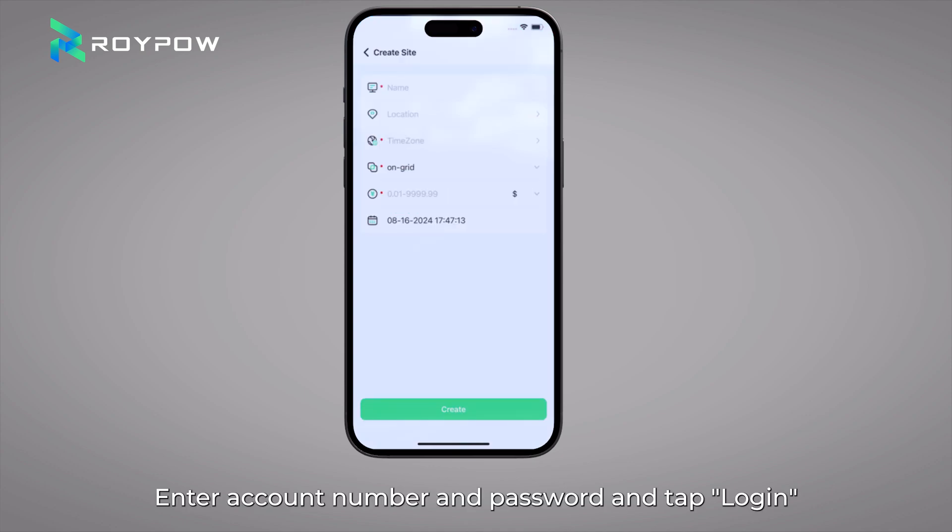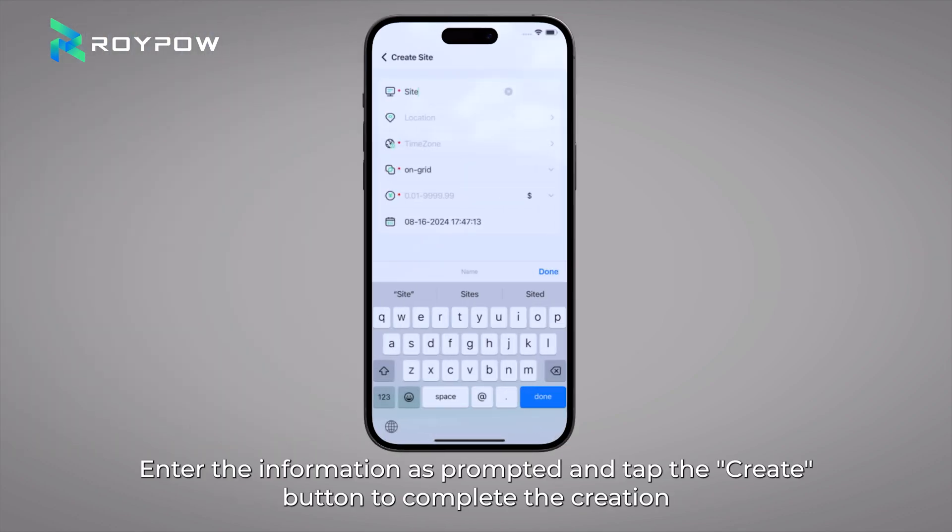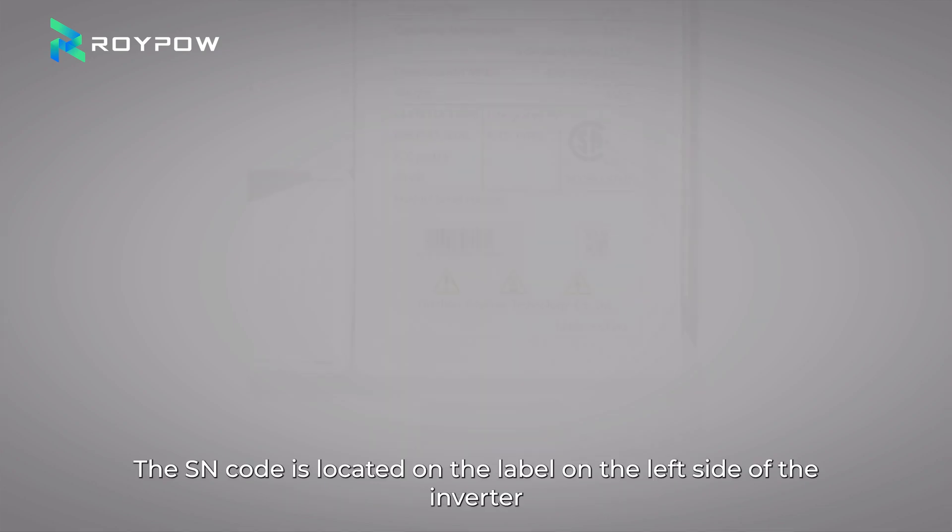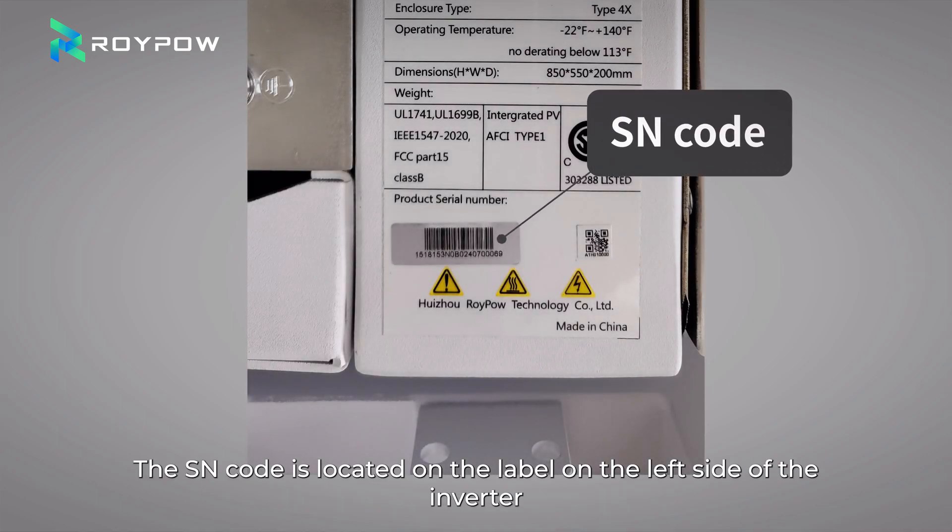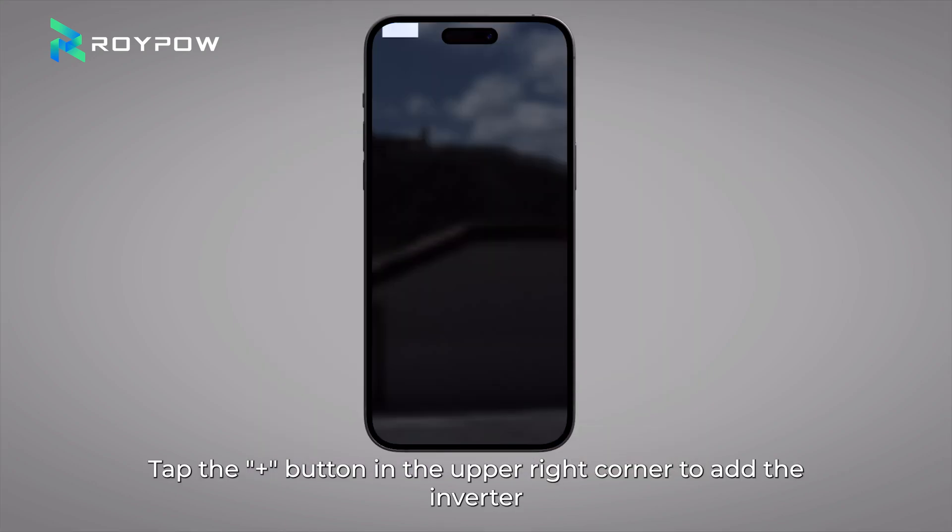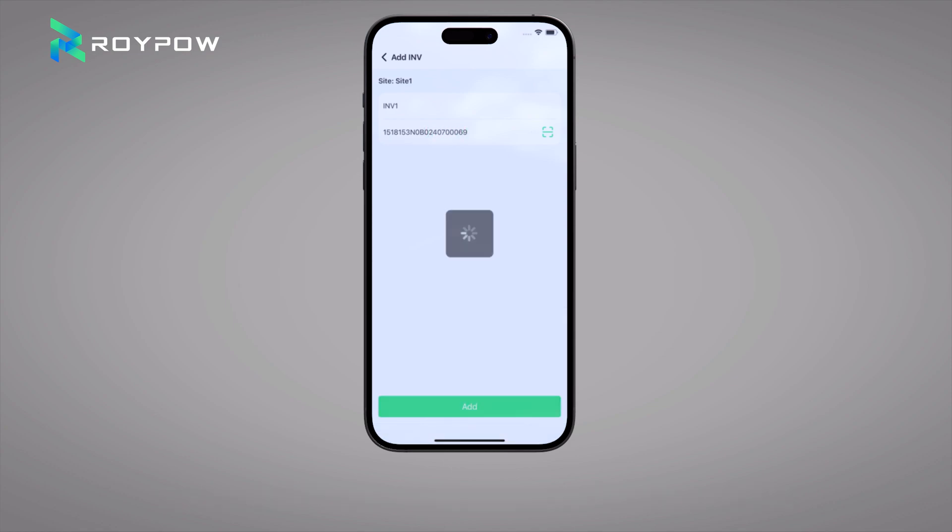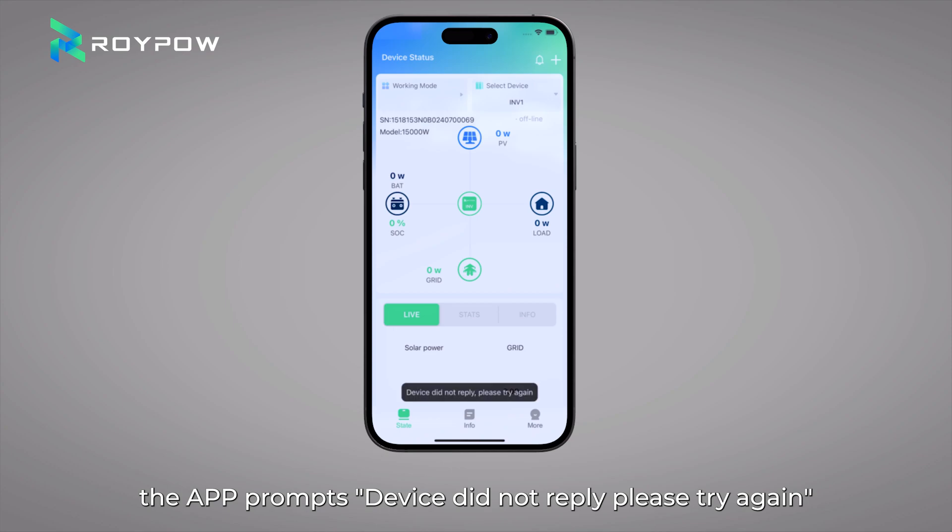Enter account number and password and tap login. It will automatically jump to create site page. Enter the information as prompted and tap the create button to complete the creation. The SN code is located on the label on the left side of the inverter. Tap the plus button in the upper right corner to add the inverter. And then enter or scan the SN code of the inverter. Enter a custom name. Tap the add button below to complete the addition. Since there is no network connection, the app prompts device did not reply. Please try again.